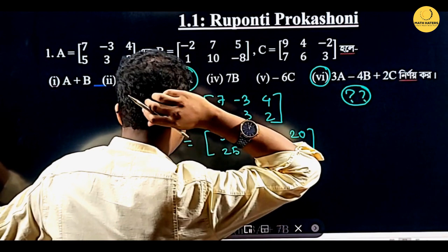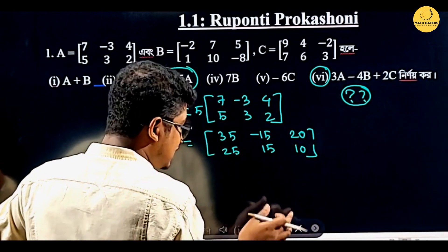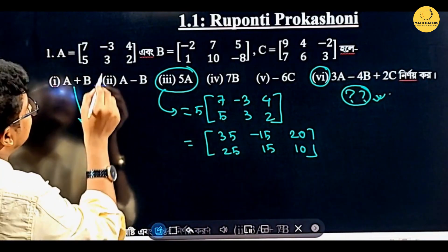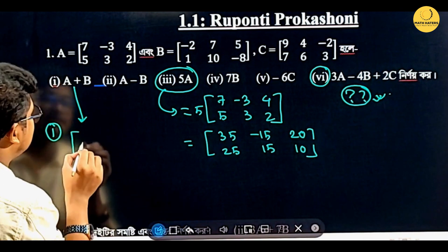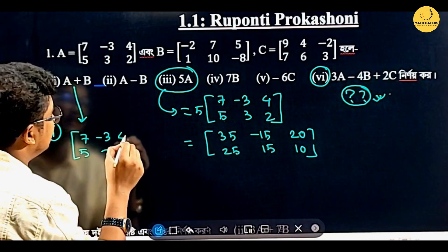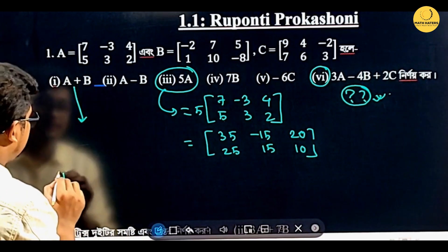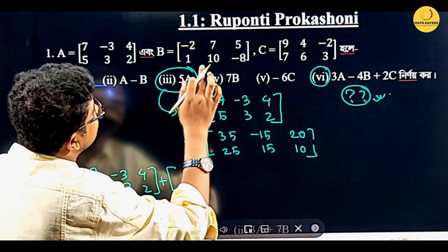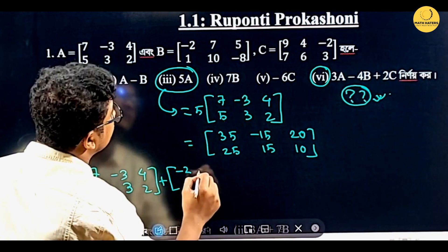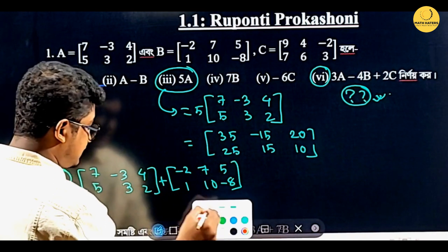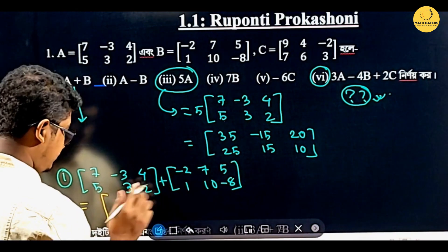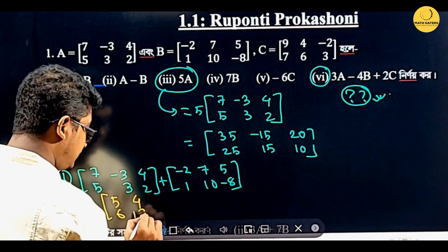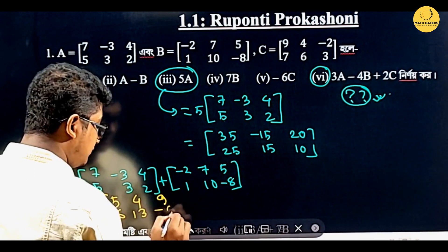We have one question with entries: 6, minus 3, plus 7, plus 4, 3, plus 10, 13, 4 plus 5, 9, 2, plus minus 8, minus 6. The matrix entries for the combination include: 5, minus 3, 3, 4, 2; and b, b minus 2, 1, 7, 10, 5, minus 8.